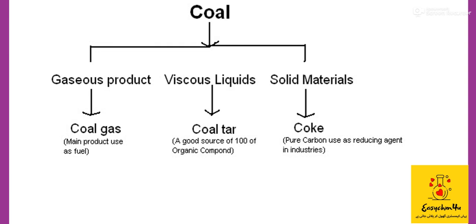Basically, from destructive distillation of coal we get three different types of products. The first is the gaseous product that is called coal gas. The second is the viscous liquid that is called coal tar. And the third is the solid material that is called coke.